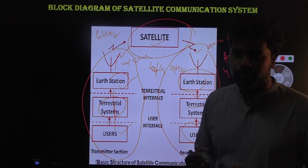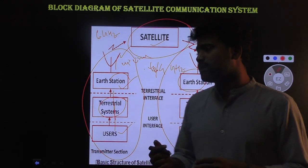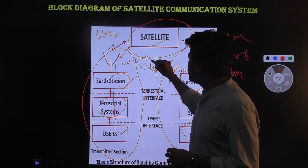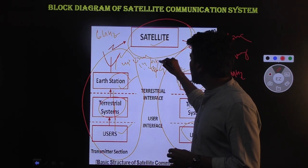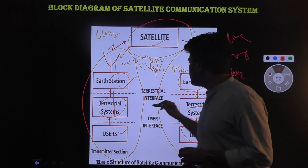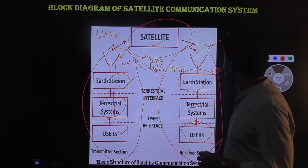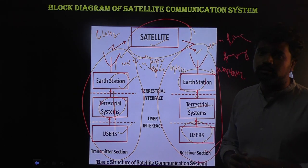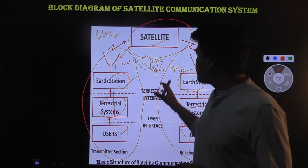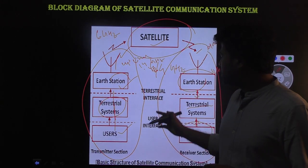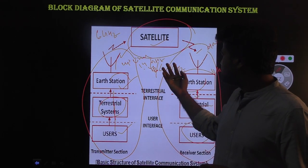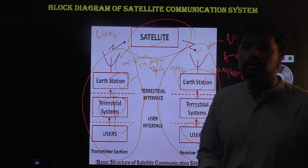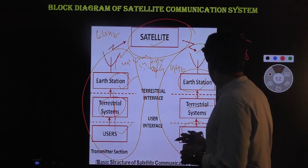There is another uplink/downlink frequency band that can be used: 40 GHz and 12 GHz. This is the process involving the transmitting section and the receiving section.